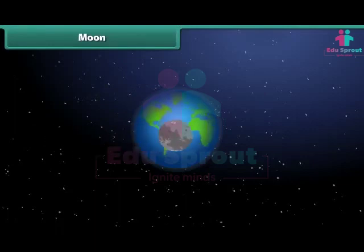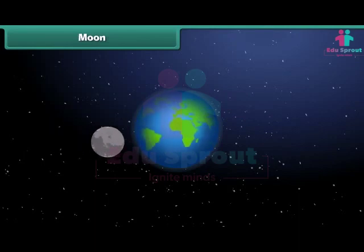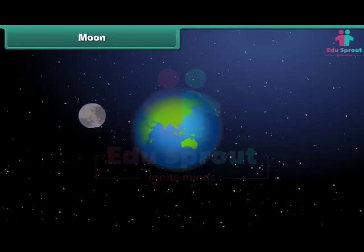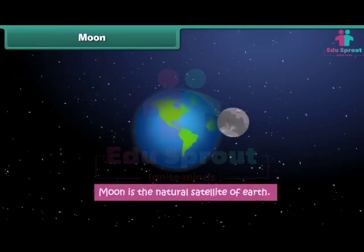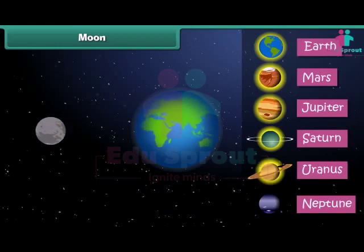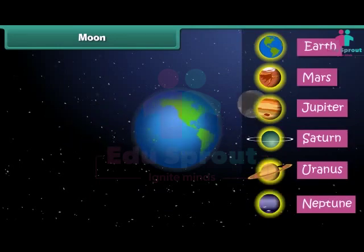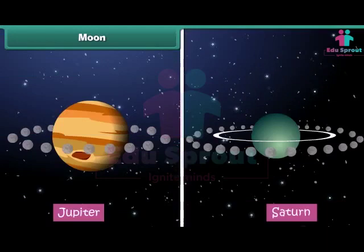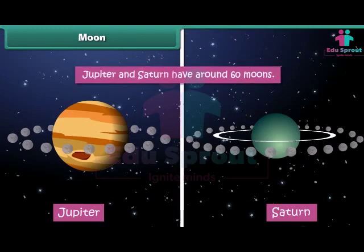A natural satellite is a celestial object that revolves around a planet. It is natural and not man-made. The moon is the natural satellite of earth and revolves around it. Apart from earth, Mars, Jupiter, Saturn, Uranus and Neptune also have moons. While earth has only one moon, all other planets have more than one. Jupiter and Saturn have around 60 moons each.